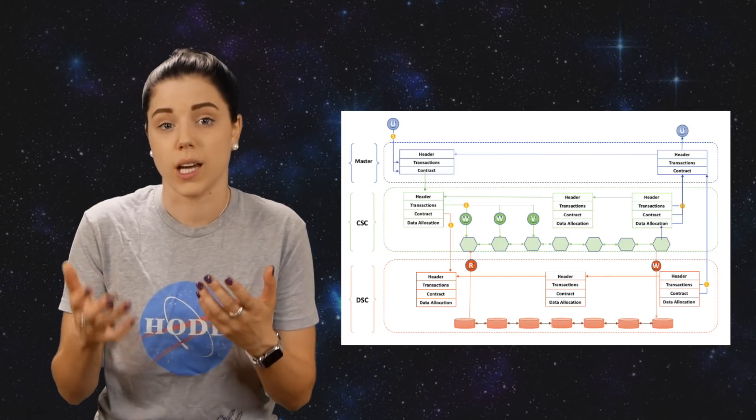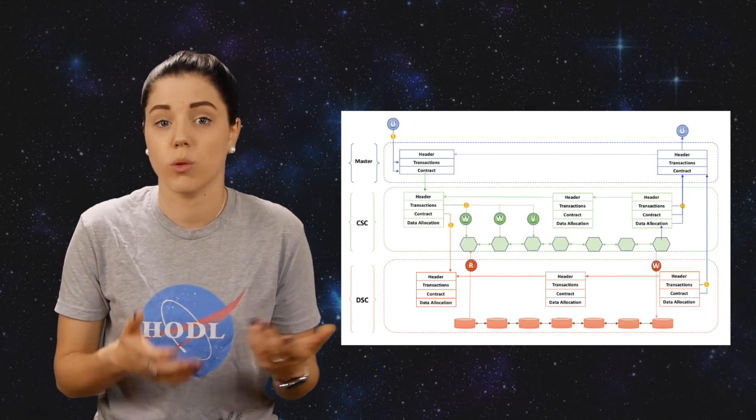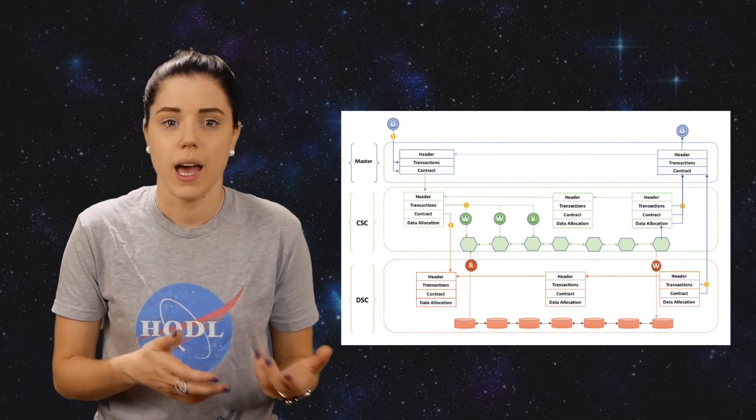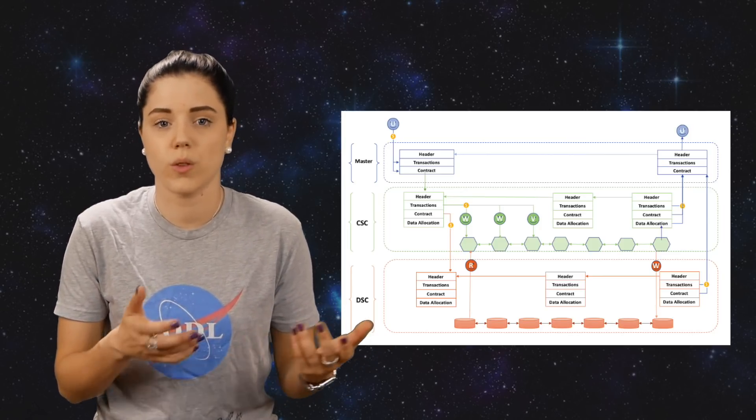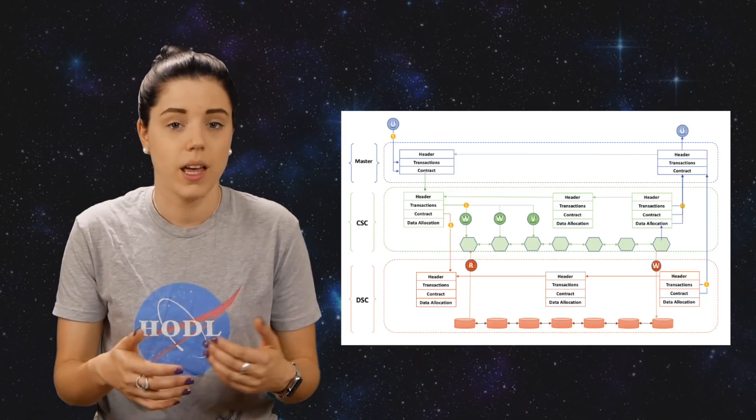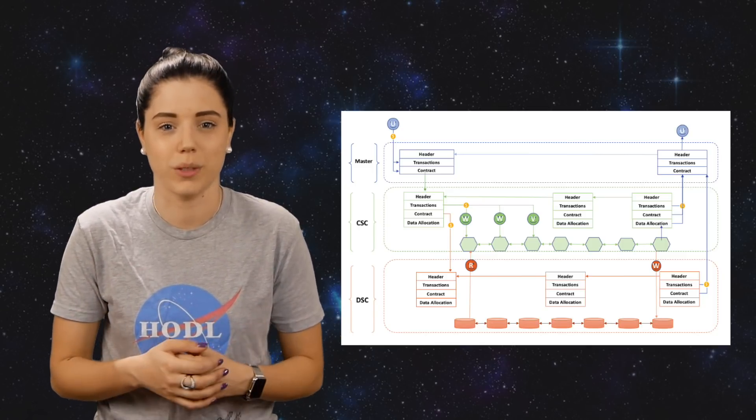So how will DX chain work? Well, a client will assign a job to the master chain, which would then be forwarded to the computation chain. The computation chain will receive the data from the data chain and that it has access to run or acquire computation and execute the tasks. The computing chain will then write the results into the data chain and inform the master chain that the job is complete. All the participating nodes will receive rewards for providing computational power and storage power.